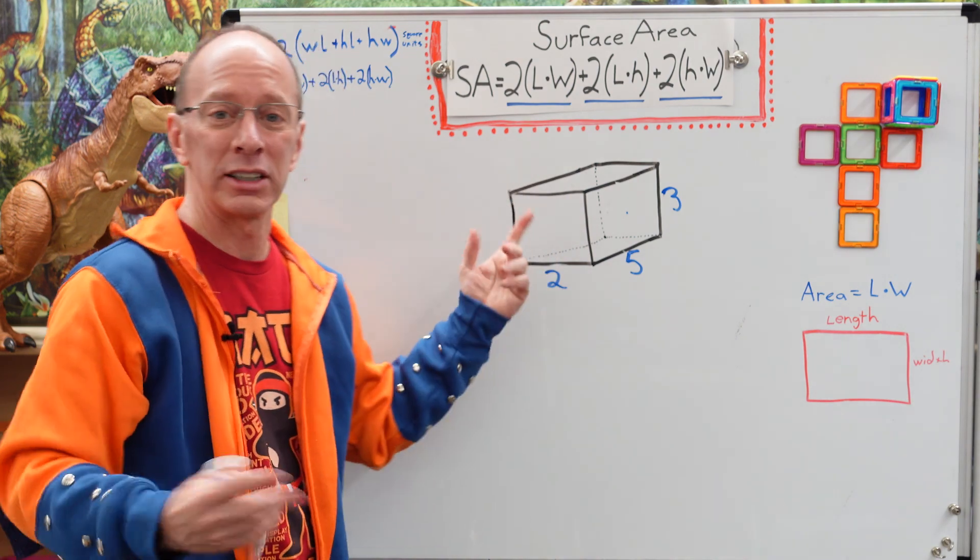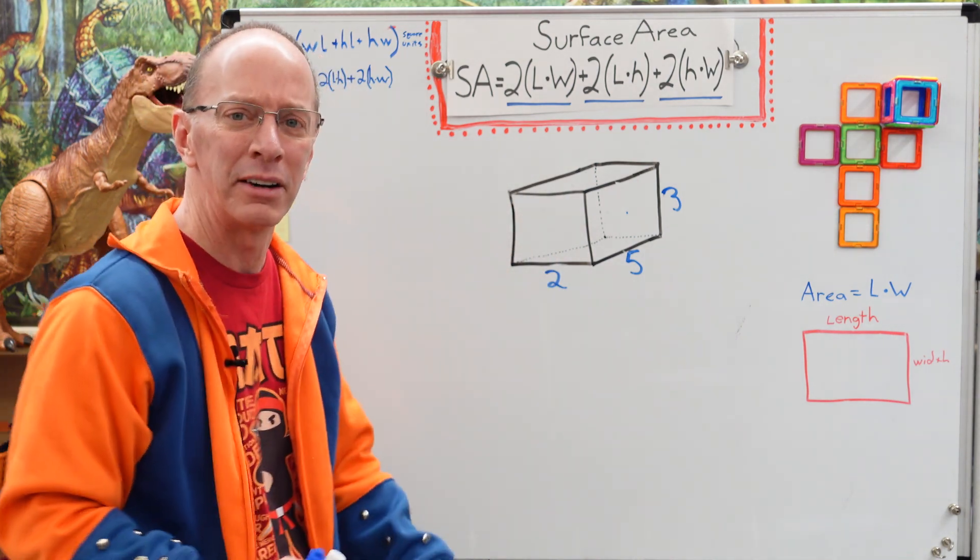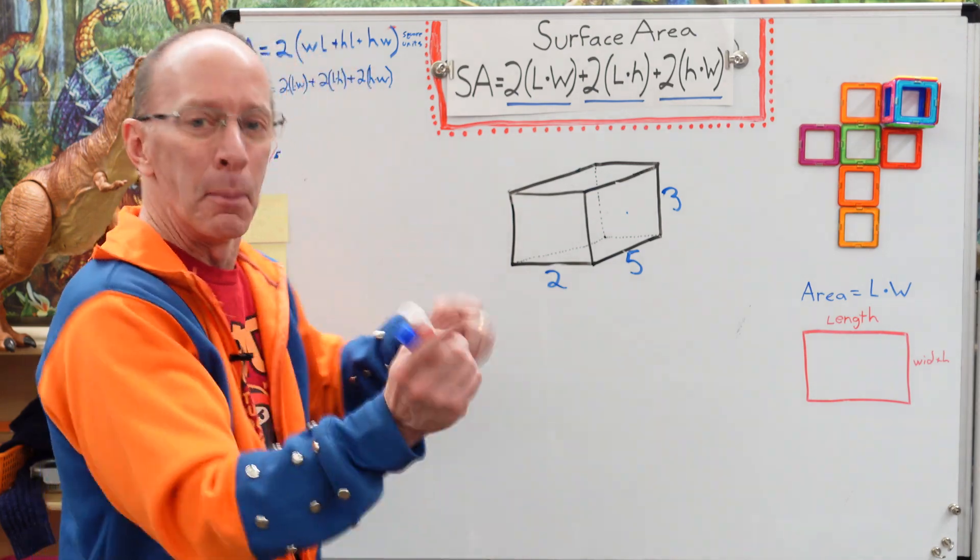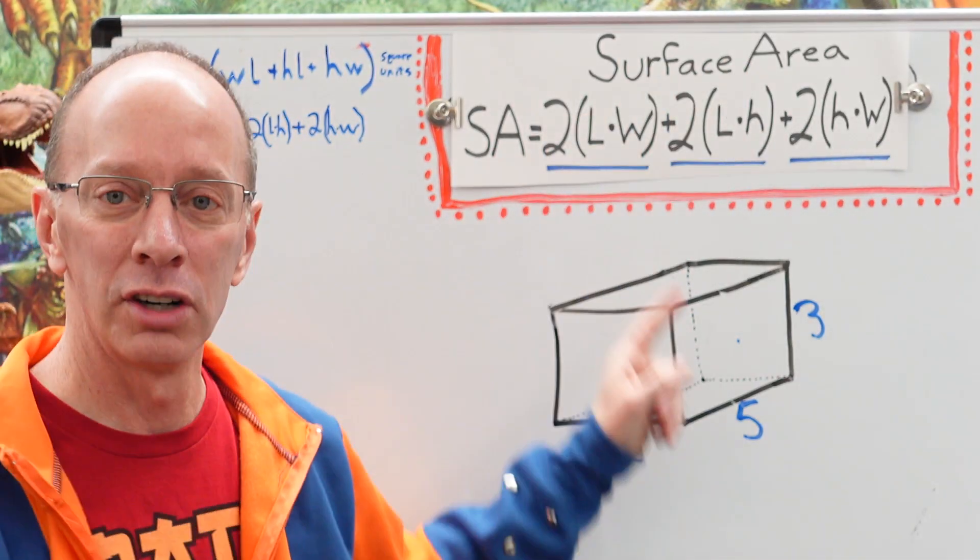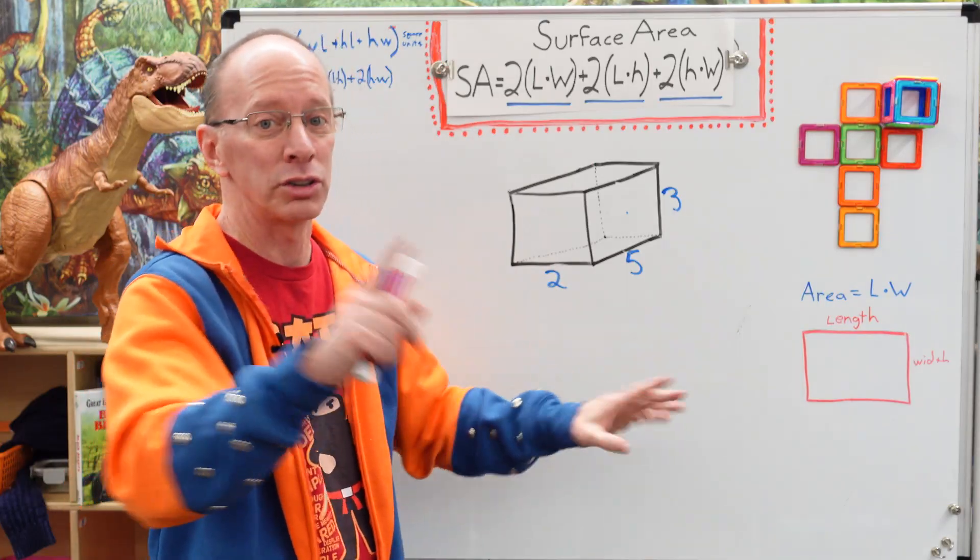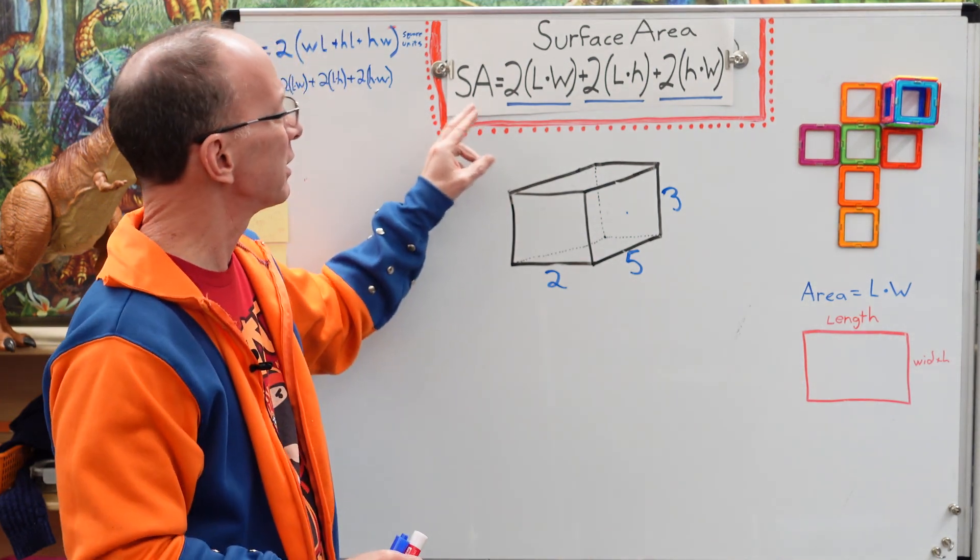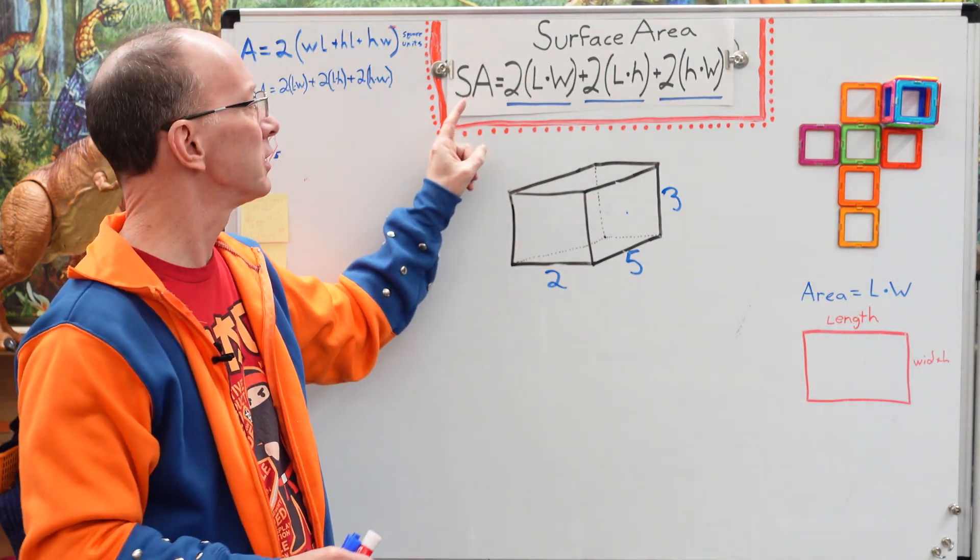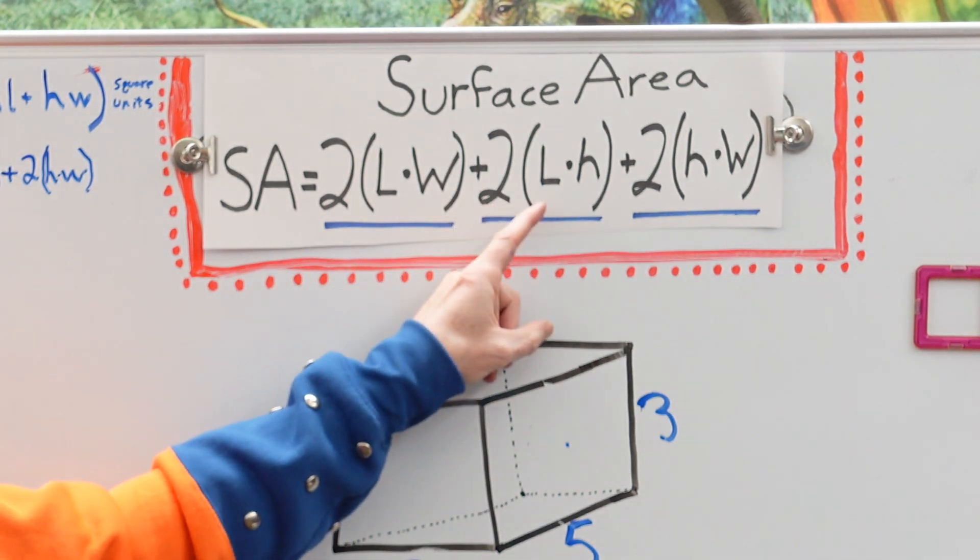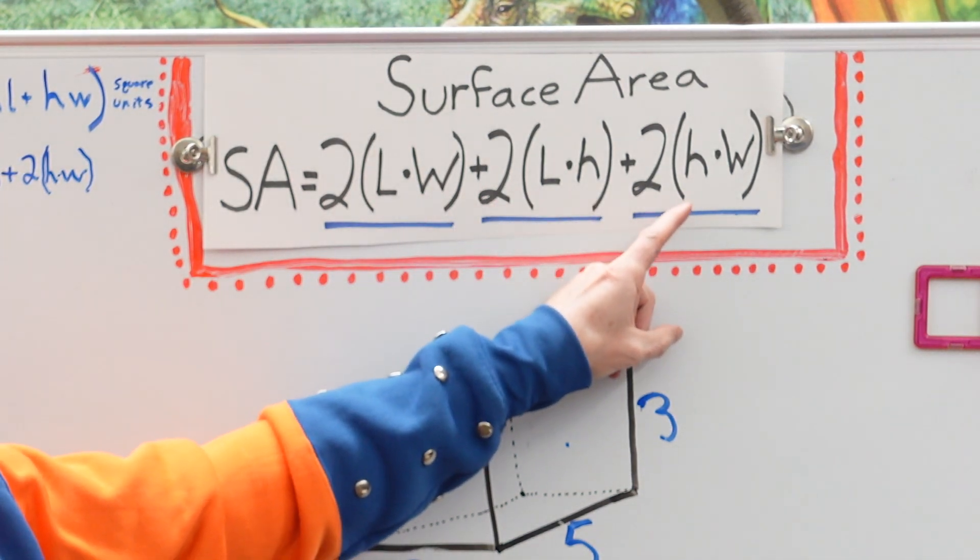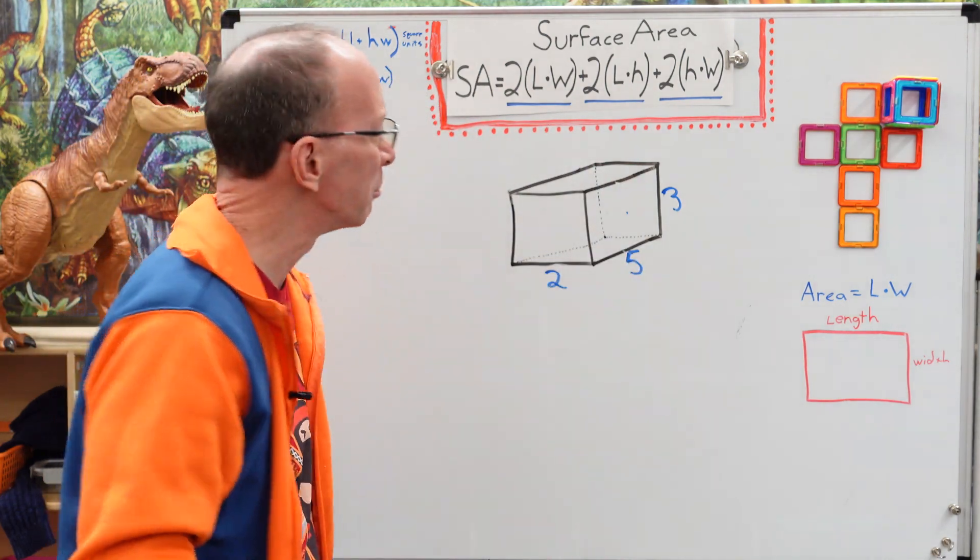Any formula, that's like a recipe, like for blueberry muffins. I like blueberry muffins. I love them. But back to the subject. Here is a formula for surface area. Now, before you go to a different channel, I'm going to make this easy cheesy lemon squeezy for you. This is the formula for surface area. Surface area equals two times length times width plus two times length times height plus two times height times width. Oh my goodness gracious, that is a mouthful.